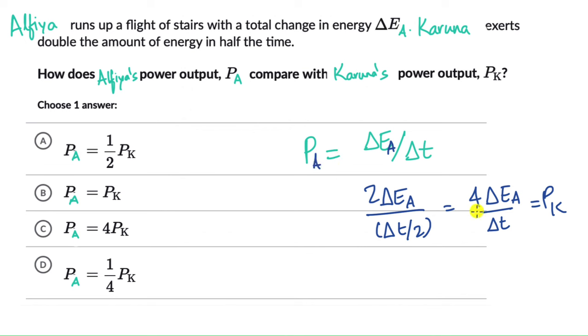So when we compare these two, we will need to multiply Pa with four. Four Pa then it will become equal to Pk, and that is really option D, that is the last option.